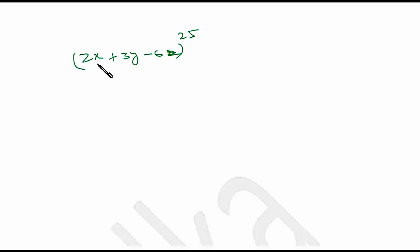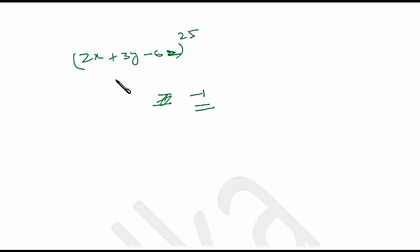Instead of expanding, just put x = y = z = 1. So 2 + 3 − 6 = −1, and (−1)^25 = −1. So the sum of coefficients in this case is −1. You can verify this rule with a smaller expression.